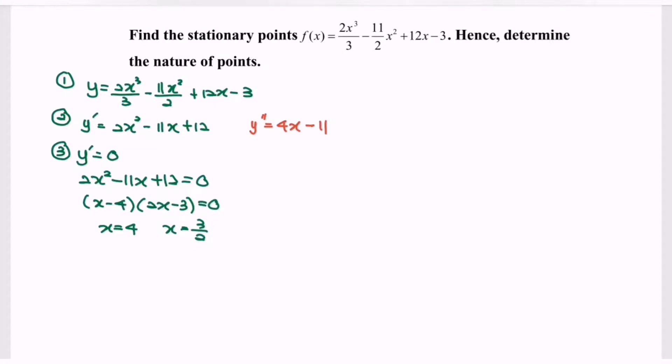So in here, when x equals 4, y will be equals to negative 1 over 3. When x equals 3 over 2, the value of y will be equals to 39 over 8. So this means that we have a stationary point, or we can say the critical point as 4 comma negative 1 over 3, and 3 over 2 comma 39 over 8. We have two critical points.